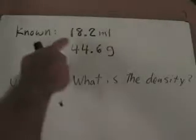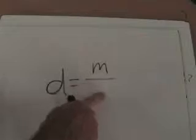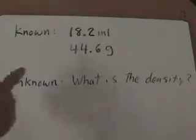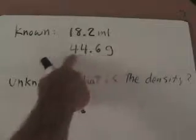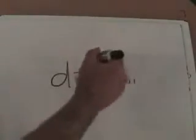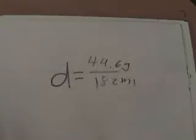So we know that the volume is 18.2 milliliters, milliliters is volume, so we'll put 18.2 milliliters, and we know that the mass is 44.6 grams, so for mass we'll put 44.6 grams, and then we solve it for density.